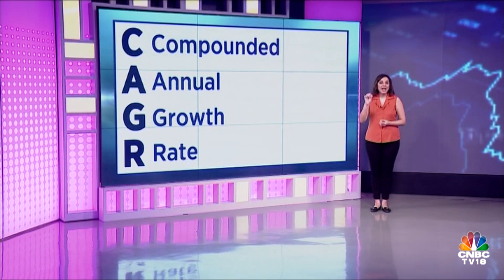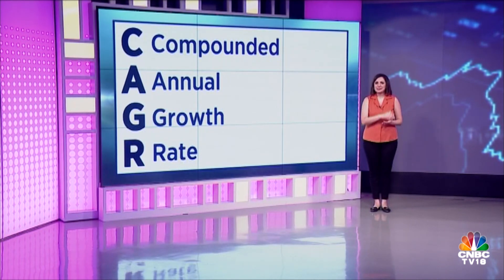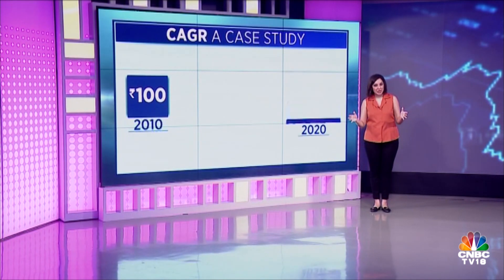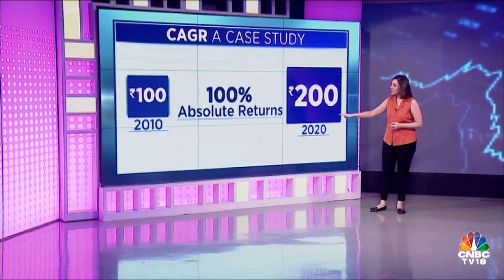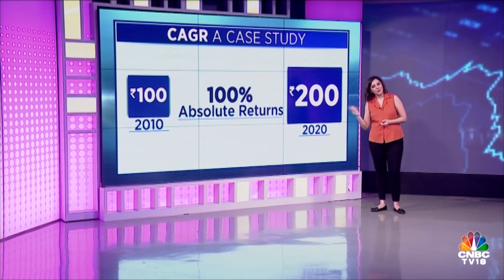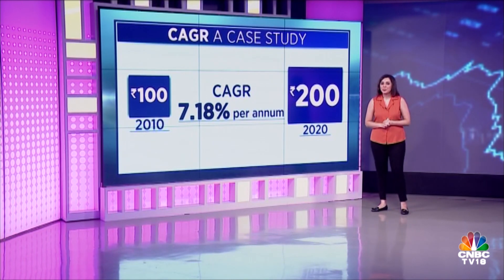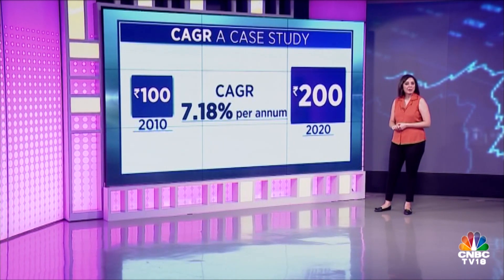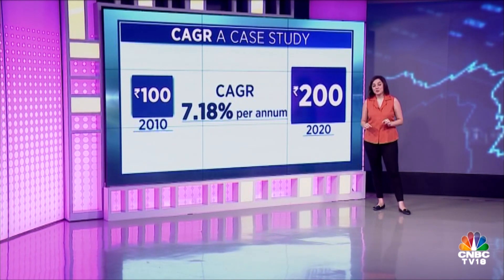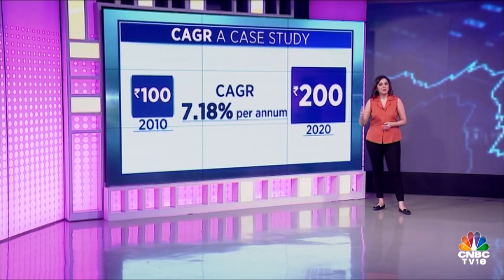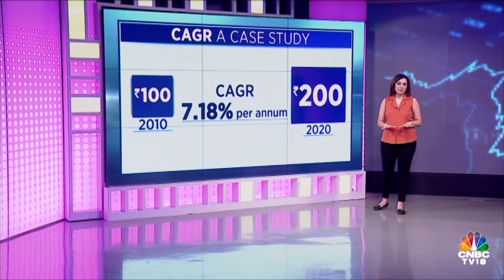As the name suggests, it's the annual rate at which your money has compounded between any two dates. So consider an investor who invested 100 rupees in 2010, and that investment is now worth 200 in 2020. The absolute returns for that investor is 100% in 10 years — he has earned 100 rupees on an investment of 100. On the other hand, the CAGR returns is 7.18% per annum, meaning the investor's money compounded at 7.18% per year for 10 years to be worth 200 rupees.